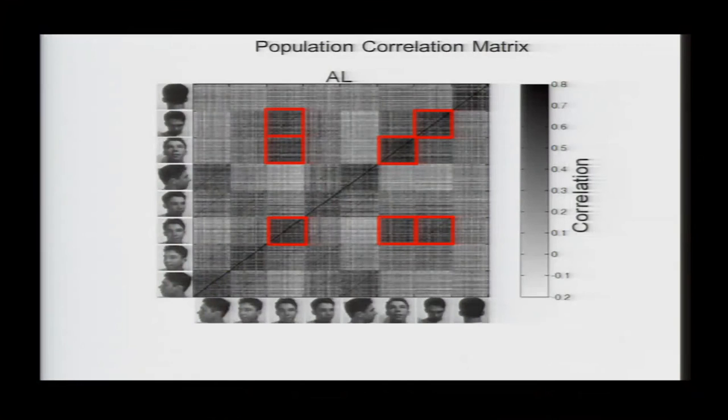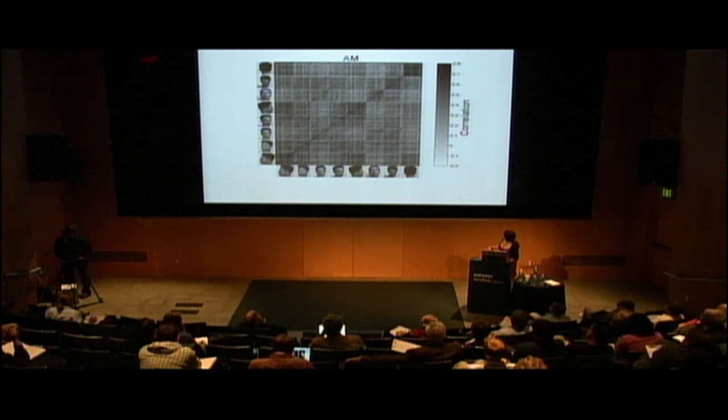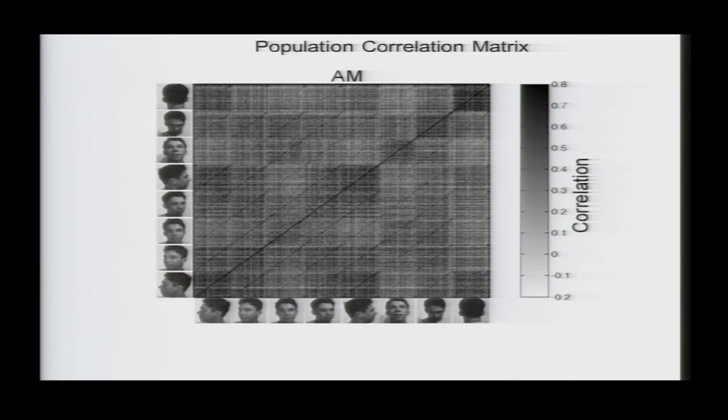And this was surprising because just listening to the neurons, we couldn't hear this invariant coding of identity. And then, finally, in AM, I hope you see these diagonals extending across all the different views. So, that means that in AM, as a population, face identity is coded in a fully view invariant way.